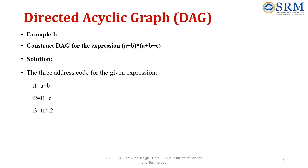Now we will consider a simple example for constructing the DAG. We have (a + b) * (a + b + c). First we will construct the 3-address code for this expression. a + b is assigned to t1. In the second part we have a + b + c — already stored in t1 — so we add t1 with c and store it in t2. Then we perform the multiplication of these two parts using t1 and t2, giving t3 = t1 * t2. Always the right-hand side will be the leaf nodes and interior nodes, and the left-hand side will be the label for the operator node.